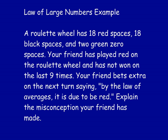Here's our first example. A roulette wheel has 18 red spaces, 18 black spaces, and two green zero spaces. Your friend has played red on the roulette wheel and has not won on the last nine times. Your friend bets extra on the next turn, saying by the law of averages it is due to be red. Explain the misconception your friend has made. I encourage you to pause this video, think about the question, and then we'll advance the slide and discuss.